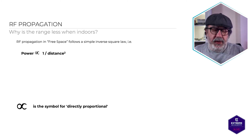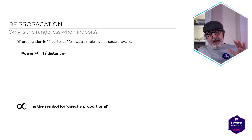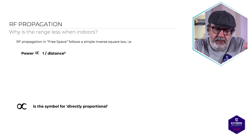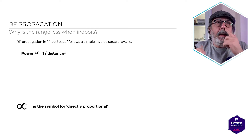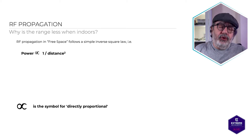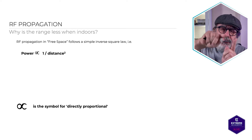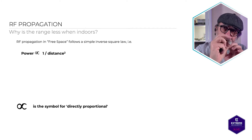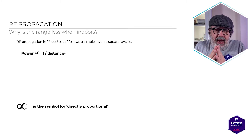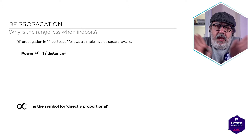RF propagation — radio frequency propagation — is about when a signal travels from point A to point B. We've spoken about free space path loss. Physics dictates that as a radio wave travels, it's going to gradually lose power. Think about the Wi-Fi symbol: the dot in the middle is the antenna, and those little lines should get gradually narrower as they progress, because as the radio signal goes out, it increases its range.